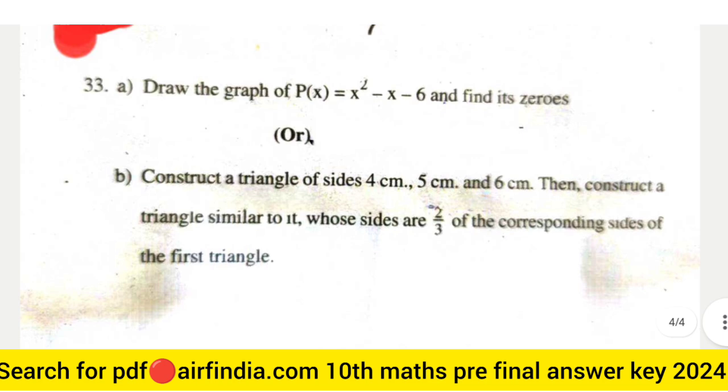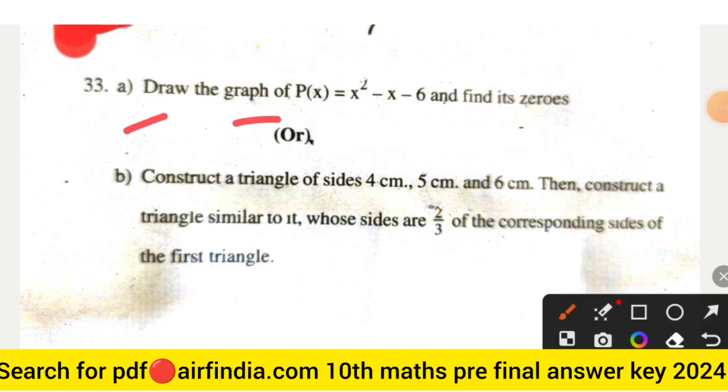This is your page number seven and the last question 33: Draw the graph of p(x) = x² - x - 6 and find its zeros. This is your question (b) option as well.